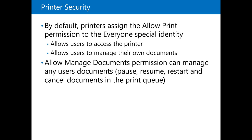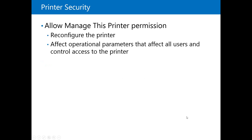Allow print permission is enabled by default for everybody. If you have a color printer, you might have two different options — like disabling color printing for your users. When users have the allow managed documents permission, they will be able to jump to any print device they like and manage the queue. Allow managed printer permission is usually for reconfiguring the printer. For example, if you are an IT person at a remote site, you can give the managed printer permission to one of the local people, and they will be able to manage the printers for you.